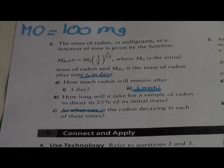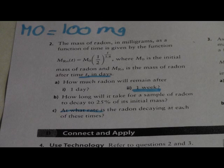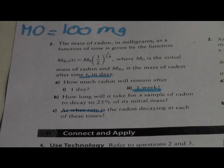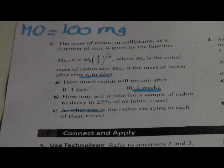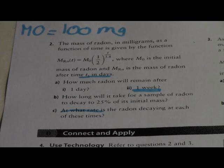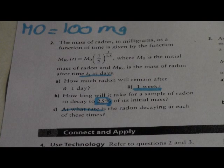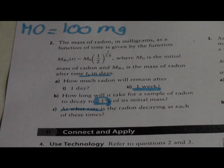For Part B, how long will it take for a sample of radon to decay to 25% of its initial mass — since the mass is originally 100 mg, 25% of it would be 25 mg. So we set our equation equal to 25 mg to solve for the time at which the mass of radon is 25 mg.